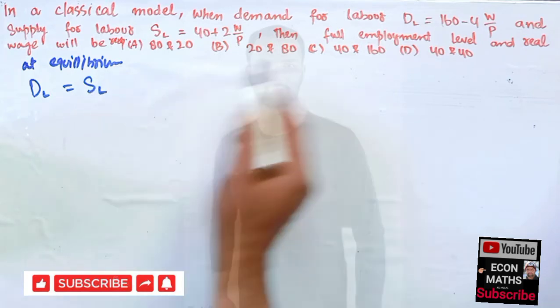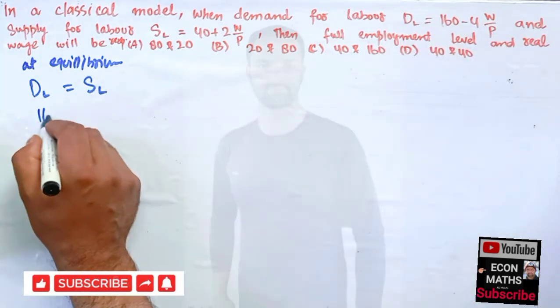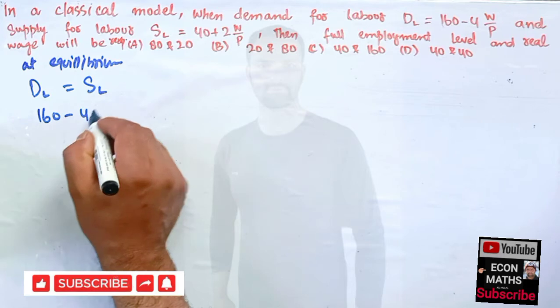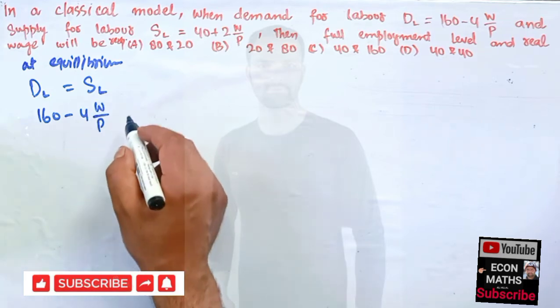At equilibrium, demand for labor should be equal to supply for labor. What is demand for labor? It is 160 - 4W/P, which should be equal to supply of labor, that is 40 + 2W/P.